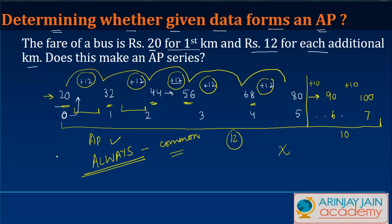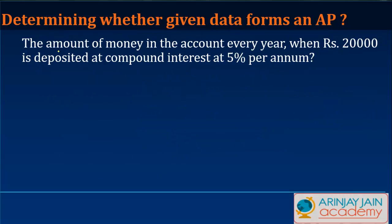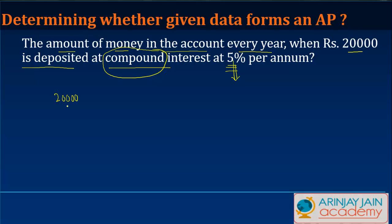Continuing with this, let's look at one more example: the amount of money in the account every year when Rs.20,000 is deposited at compound interest at 5% per annum. Note the word compound interest. This means that in the first year, I give Rs.20,000 to the bank. The bank gives me interest at 5% on 20,000 and after one year the amount becomes Rs.21,000.